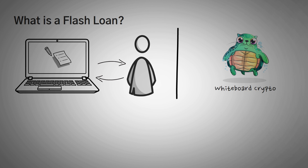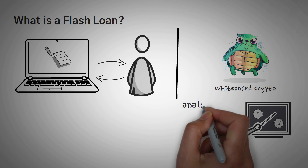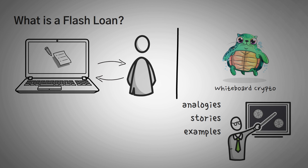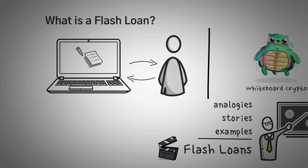Welcome to Whiteboard Crypto, where we explain complicated cryptocurrency topics in a way that makes them so easy to understand that your grandmother could write a book about it. We use analogies, stories, and examples to teach the everyday person about crypto topics so that the technology can keep growing. In this video, we are going to explain what a flash loan is and what the purposes of it are.